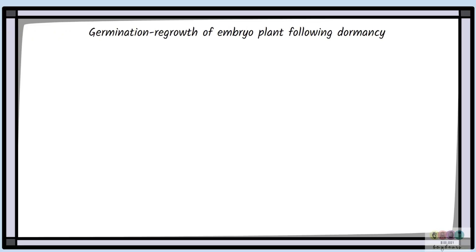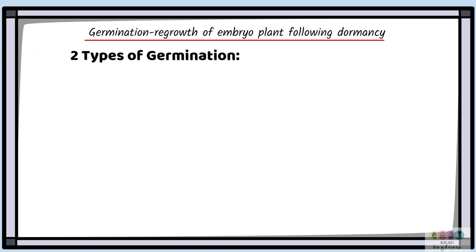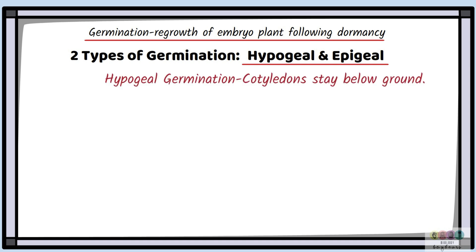Germination is the regrowth of the embryo plant following dormancy. There are two forms of germination: hypogeal germination and epigeal germination, and we need to know a little bit about both. They both relate to the cotyledons. In hypogeal germination, the cotyledons stay below the ground — think of H for 'hiding below the ground.'